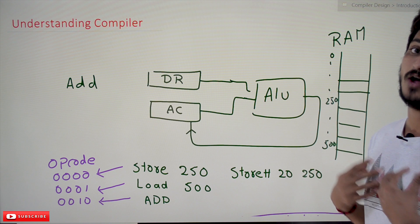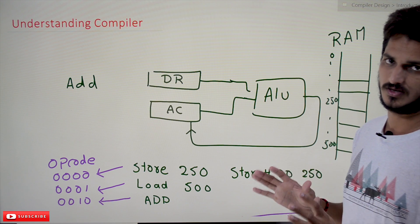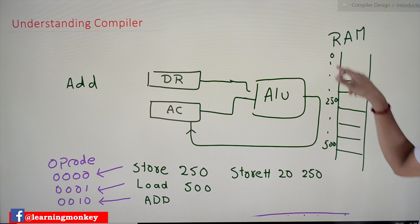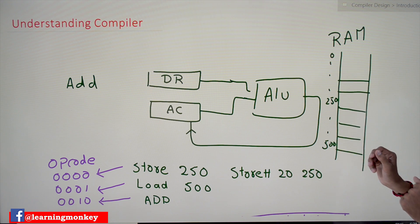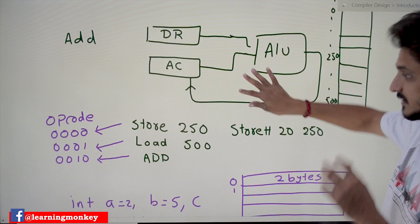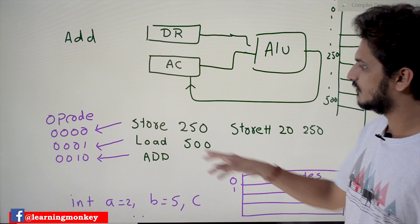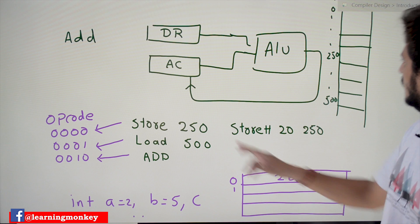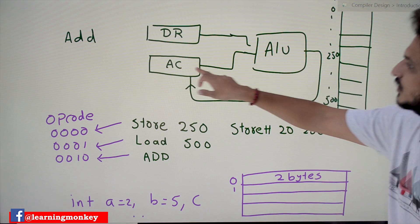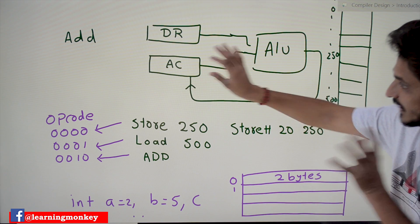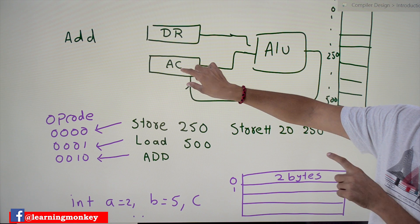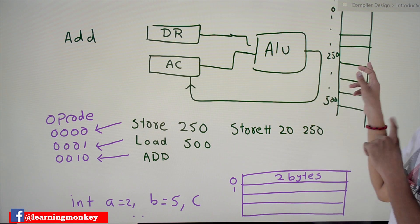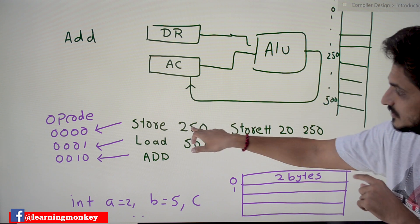This is the processor we discussed in computer architecture. We also have some random access memory — assume addresses 0, 1, 2. We will discuss some instructions that are also helpful for you. The instruction 'store 250': what this instruction does is — whatever is in the accumulator, take that value (seven is there in the accumulator), and place it in memory location 250 in RAM.